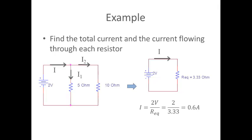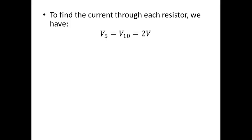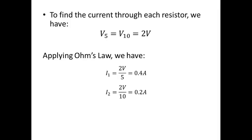To find the individual currents I1 and I2, note that the 5 ohm and 10 ohm resistors are connected in parallel, so the voltage drop across each one is the same — equal to the source voltage of 2 volts. Since we know the voltage across each resistor and its resistance, we apply Ohm's law individually. For I1: 2 volts divided by 5 ohms gives 0.4 amps. For I2: 2 volts divided by 10 ohms gives 0.2 amps.